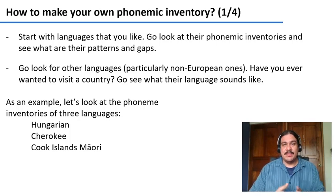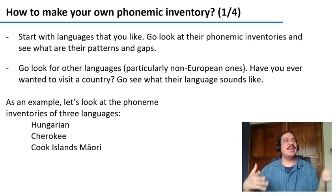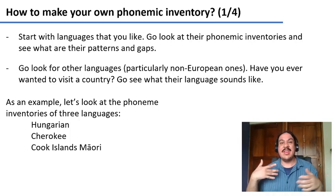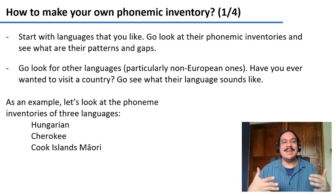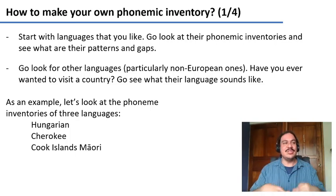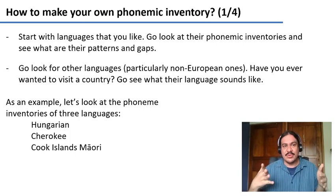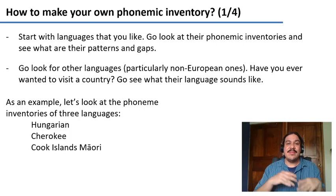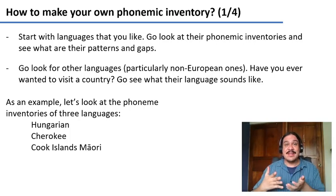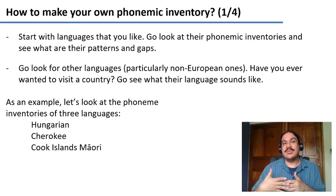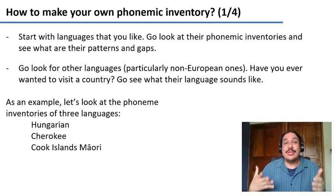Think of languages that you like — a few languages that you have learned or that you think are beautiful — and type Wikipedia Hungarian phonology or Wikipedia Hindi phonology. Go look at their phonemic inventories to see what sounds they have and what sounds they don't have. I suggest that in addition to languages you love, you look at languages outside of Europe, because that will give you many different ideas of what human languages could sound like.